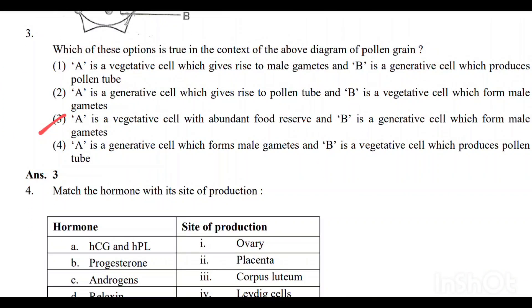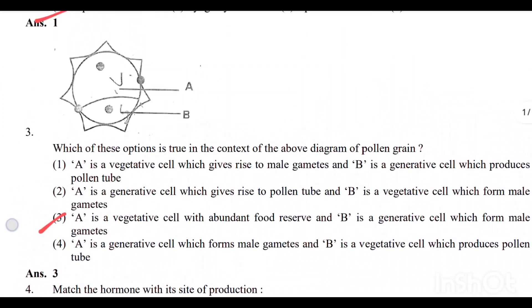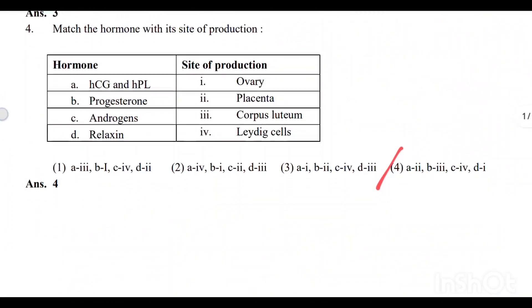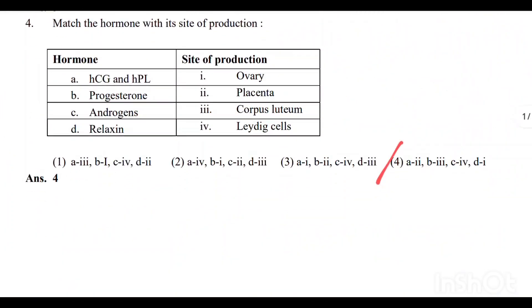Question number 3: Option 3 is the correct answer. A is a vegetative cell with abundant food reserve; B is a generative cell which forms male gametes. Option 3 is the correct answer.